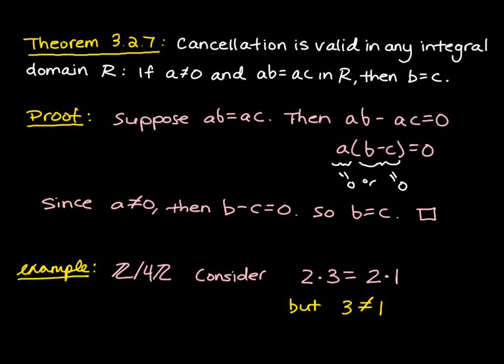And the reason why is because two is a zero divisor. So this property that a b equals a c implies b equals c only holds in a ring without zero divisors, namely an integral domain.